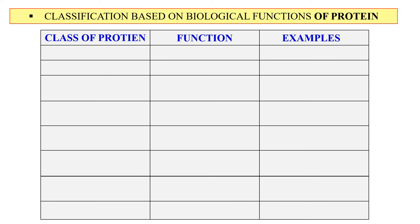The last category of classification is based on the functions of proteins. The first type is enzymatic proteins — these are proteins that perform the function of enzymes, meaning they are biological catalysts that catalyze biochemical reactions. Examples include urease, amylase, and hexokinase. All enzymes fall under this category of enzymatic proteins.